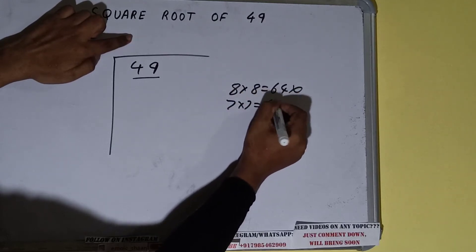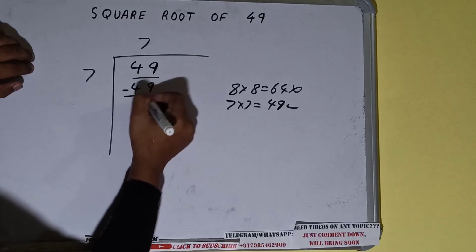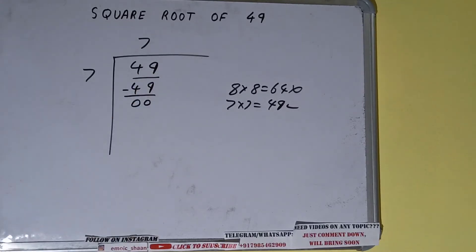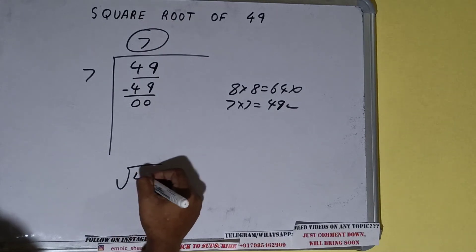So 7 here and 7 here, 49. Subtract and we'll get 0. Once we get 0, whatever is in the quotient will be the answer. So square root of 49 will be 7. That's it.